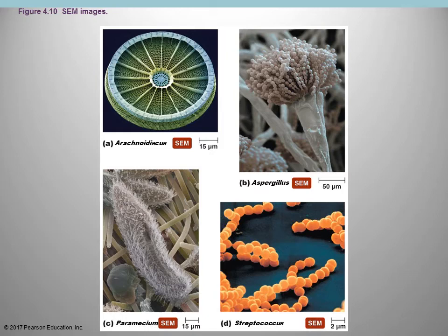You have to decide what information you're trying to gain: if you need to see the external surface, use the scanning microscope; if you need internal structures, use the transmission. One important note — the preparation process required for either transmission or scanning electron microscopes kills the sample. So if you want to look at a living cell, you cannot use an electron microscope.